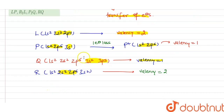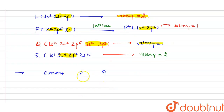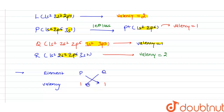An important point to remember: if we want to write the ionic formula of electrovalent compounds, suppose we have elements P and Q with valencies 1 and 1 respectively. We cross-multiply the valencies to write the ionic formula, and we get P1Q1, which simplifies to PQ. This is the method we use.